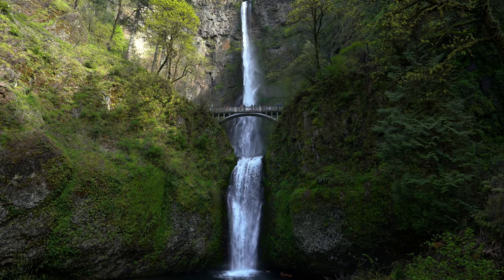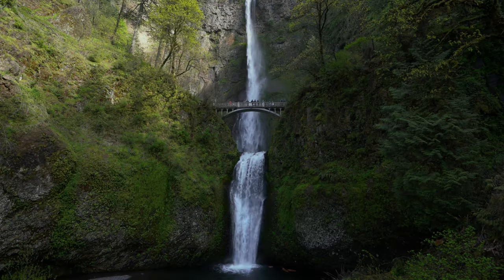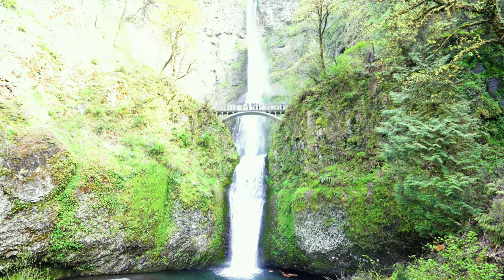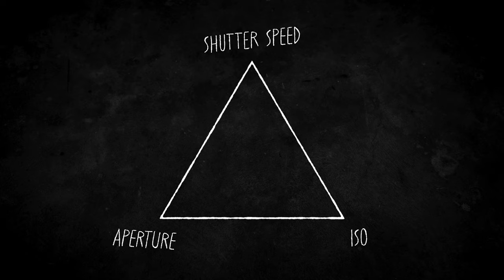Exposure is just a term for how bright or dark an image is, and under or overexposed means exactly what it sounds like. Underexposed is too dark, and overexposed is too bright. Cameras have three main mechanisms for controlling and adjusting exposure, commonly referred to as the exposure triangle. Each of the three components of the exposure triangle have a primary purpose, which is to make the image brighter or darker, but all three also have a secondary outcome when you adjust them. At the top of the exposure triangle is shutter speed.